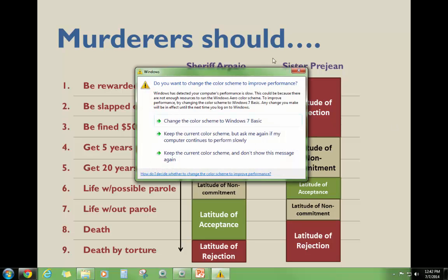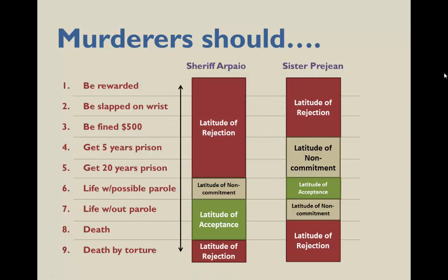Sister Prejean's latitude of rejection overlaps a little bit with Sheriff Arpaio's — she would reject those first three possibilities as appropriate sentences for murder. She has a wider latitude of non-commitment, so if someone were sentenced to five years or 20 years of prison, she doesn't feel strongly about that. She has one very strong anchor statement: her preferred position is that people would be sentenced to life with the possibility of parole. She's okay with the possibility of life without parole, so that falls into her latitude of non-commitment. And for her latitude of rejection on the extreme end, she's absolutely against the death penalty in any situation, and clearly against death by torture. I hope that helps illustrate how social judgment theory works.